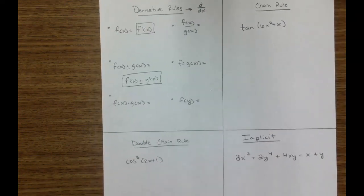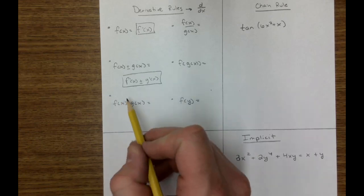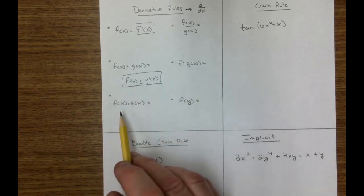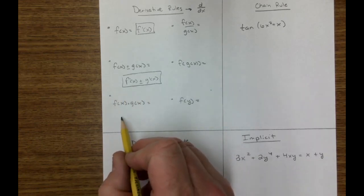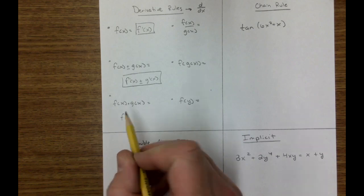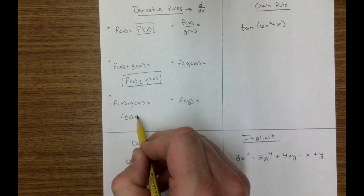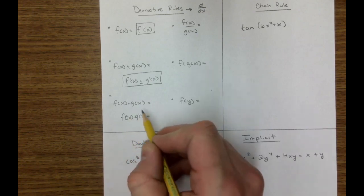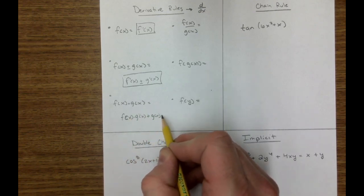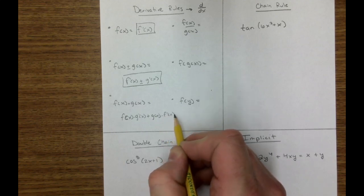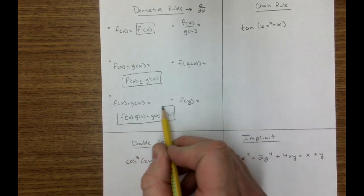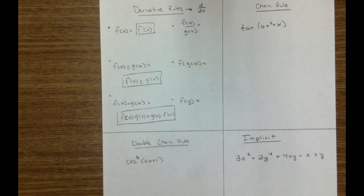The problem comes in when we try and do a multiplication problem. You can't do them individually. You have to do our product rule: left function, which is just f of x, left d right, plus right function, d left. And that's how we get the derivative of a product.